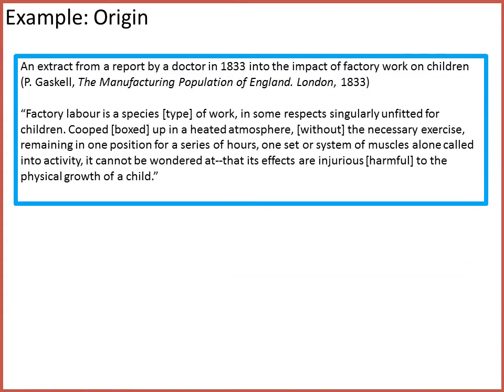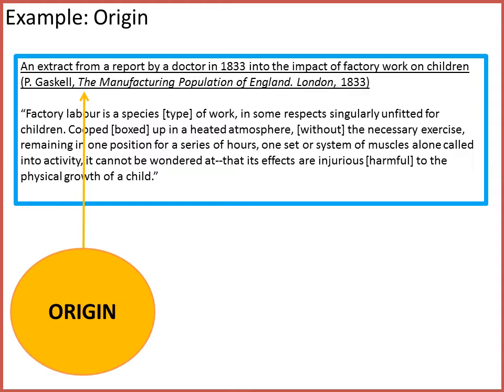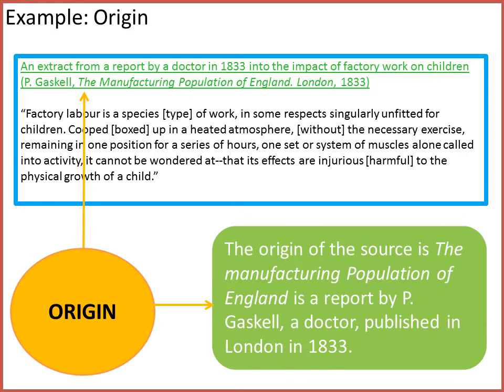So now we're ready to jump on this OPVL train. The first thing we need to do is to get the origin. Here we have a source, and this source is an extract from a report. Now we're going to work to get that origin. In order to get the origin, we're going to look at this portion of our source. It could be at the top, it could be at the bottom, but your source is going to have something that gives you information. And once you find that info, you then extract it. From that, the origin of the source is The Manufacturing Population of England, a report by P. Gaskell, a doctor, published in London in 1833.